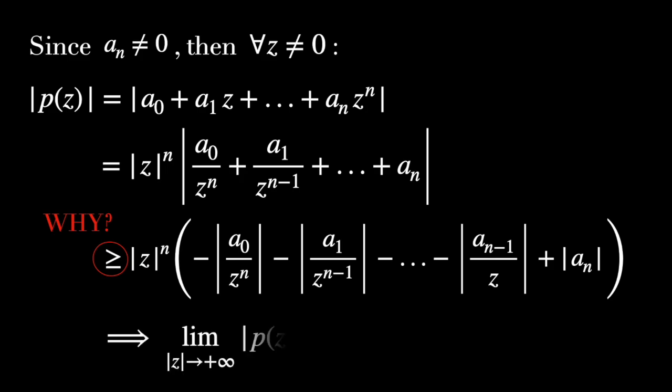But then, this implies that the module of this polynomial for z that tends to infinity is greater than z to the power of n in absolute value times a_n in absolute value, which equals plus infinity.